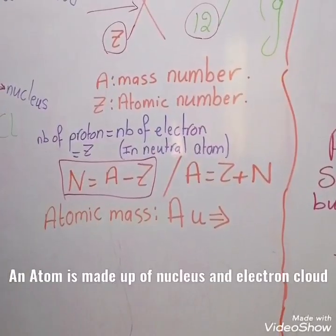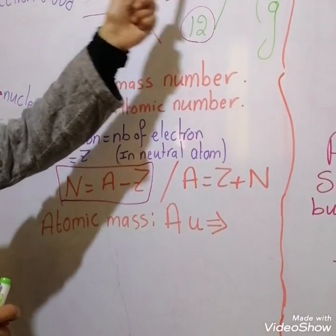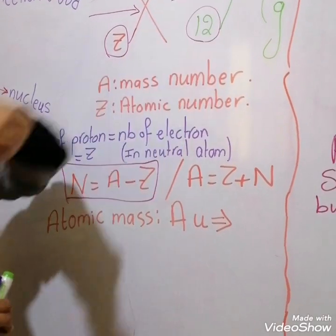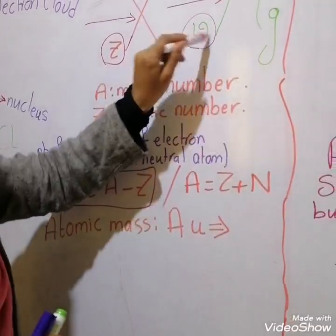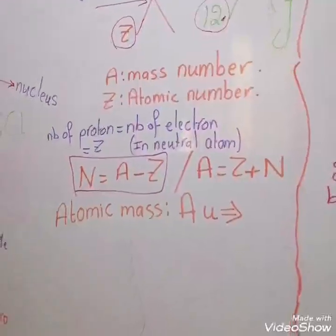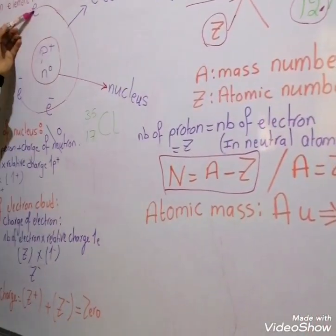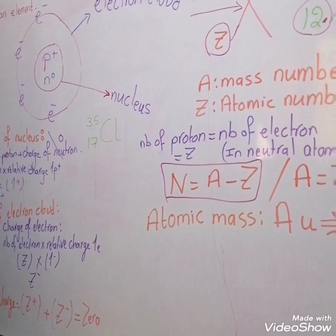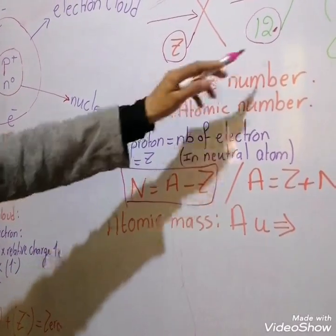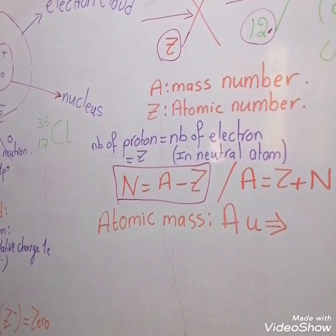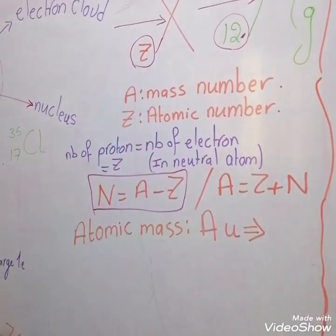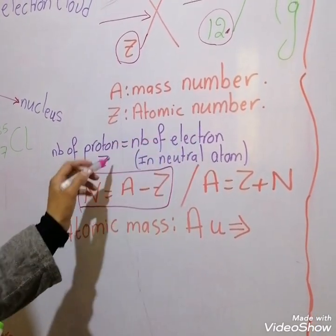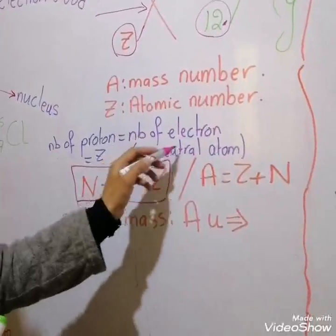If you want to calculate mass number and atomic number: A is the mass number found above the symbol, while Z is the atomic number found below. Also, number of proton equals number of electron in a neutral atom. So always number of proton equals number of electron and also equals Z. For Mg, number of proton equals number of electron equals Z equals 12.